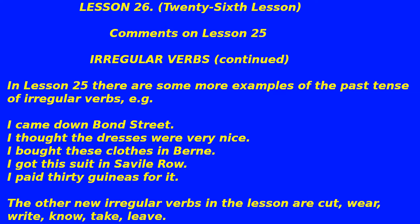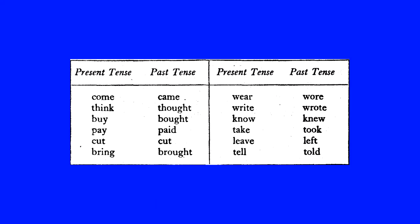The other new irregular verbs in the lesson — present tense and past tense: come/came, think/thought, buy/bought, pay/paid, cut/cut, bring/brought, write/wrote, know/knew, take/took, leave/left, tell/told.